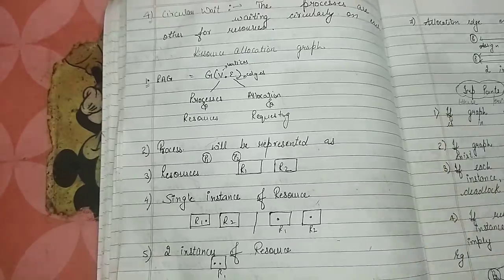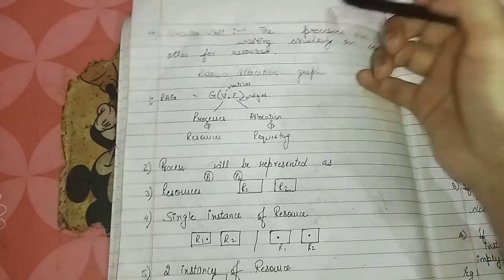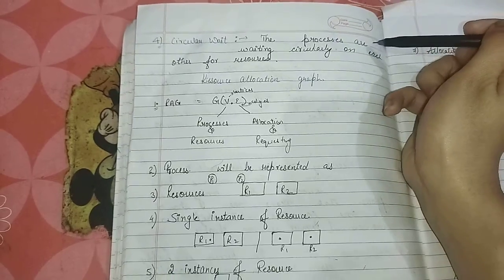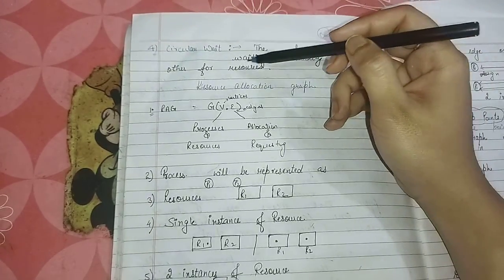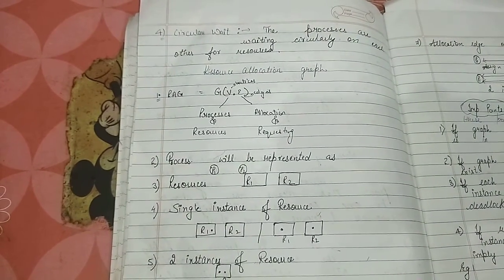So next is our circular wait. What is circular wait? The process is waiting on each other for the resources. Now the processes are waiting for the resources.